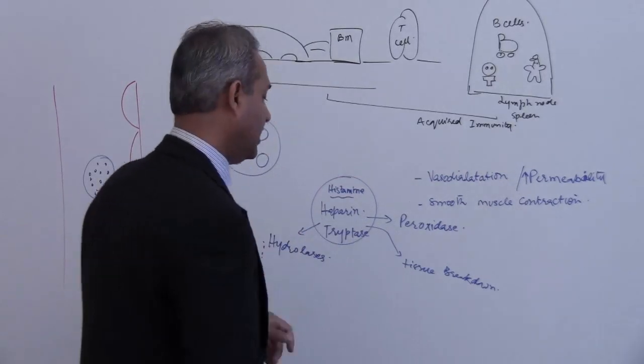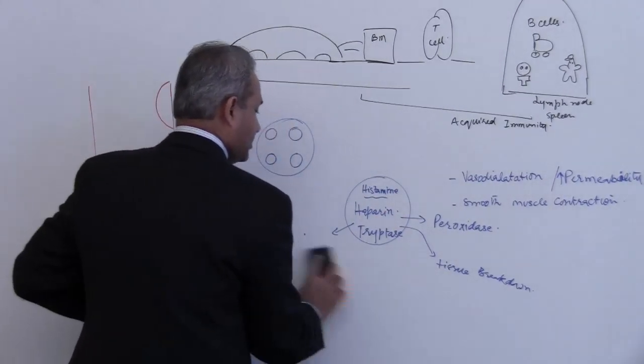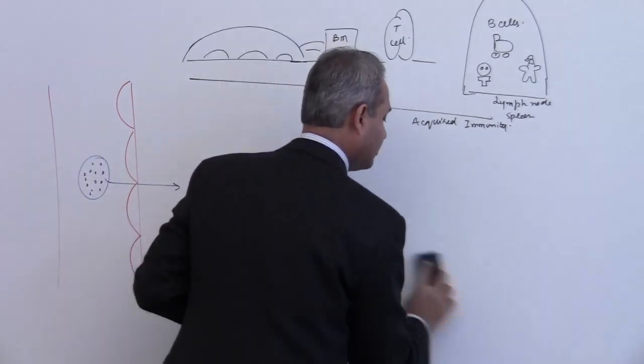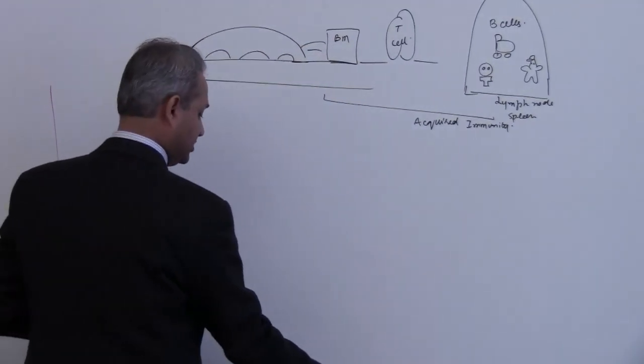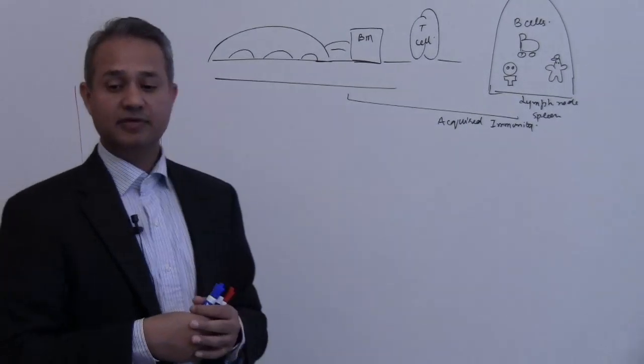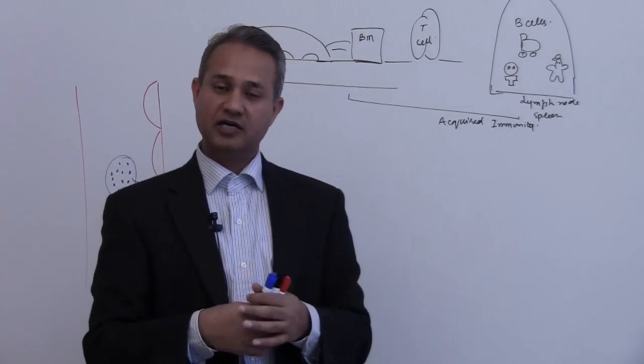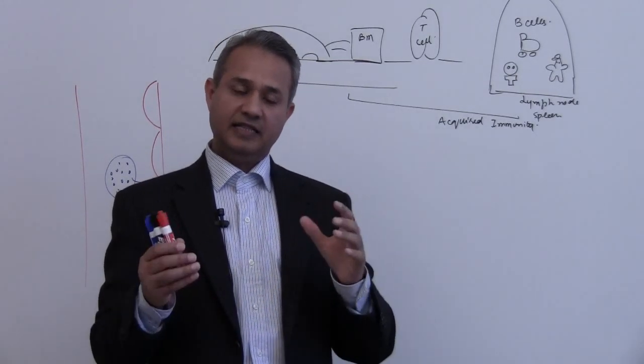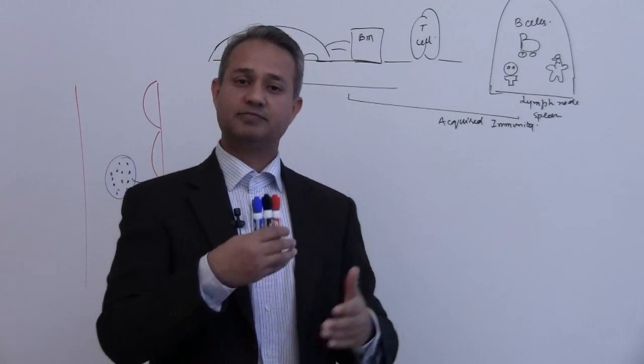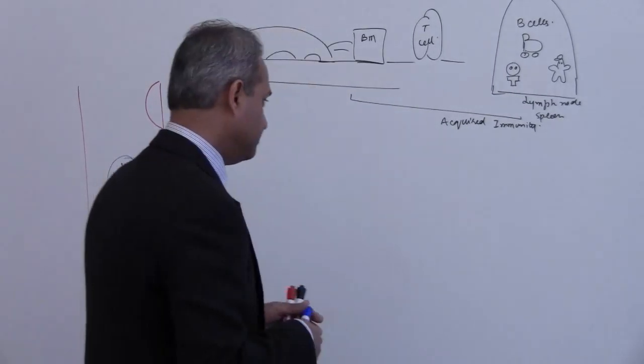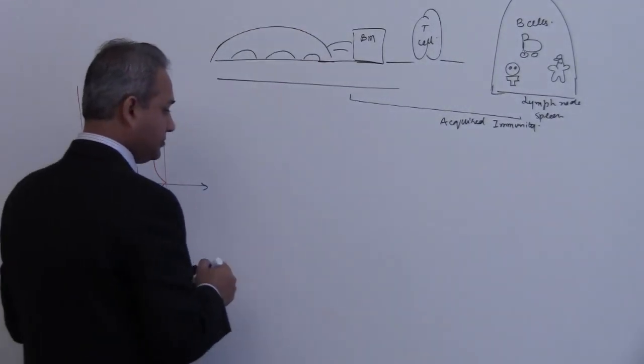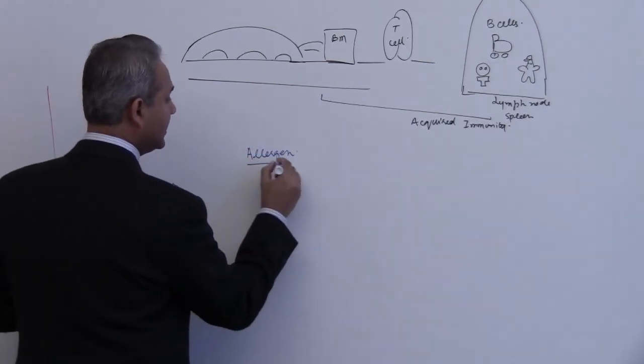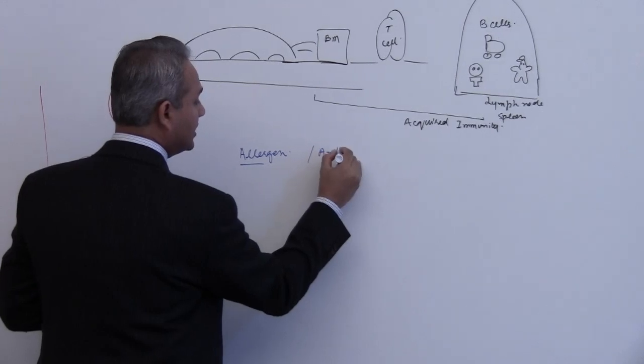Now let us see how does this whole thing work. First of all, this is not a lecture in which we would talk about the allergic reactions. But to be able to understand the basophil and mast cells, we have to understand how the type one allergic reaction occurs briefly. So let us see. First of all, the concept of allergen. The concept of allergen as compared to antigen is this.